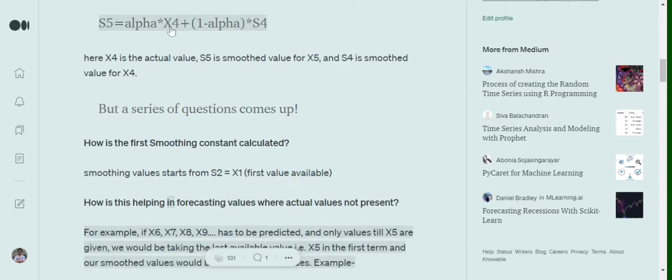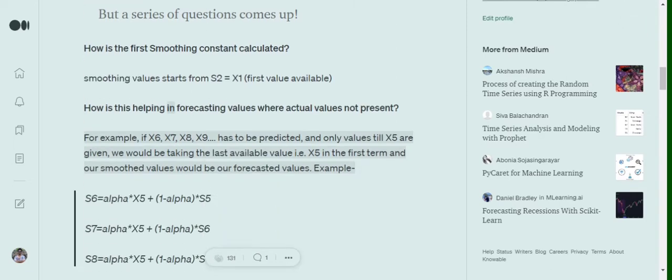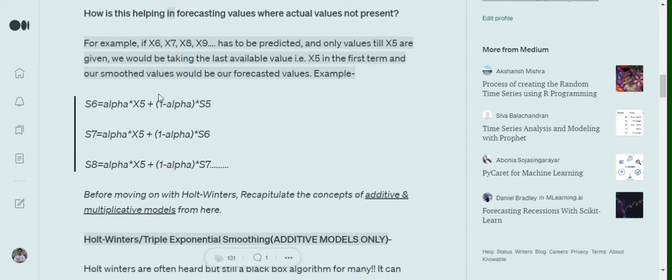Now eventually for S3, the equation becomes easier for us. For S3, it becomes S3 = alpha × X2 + (1-alpha) × S2. Now S2 equals to X1 only. And this is how different terms of the smoother time series can be calculated. Here you can see for S6, S7, S8.